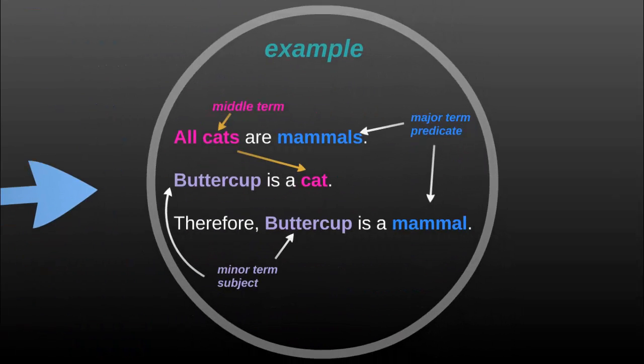So let's look at an example of a categorical syllogism. Here you can see that the middle term connects the two premises. The major term is the predicate of both the major premise and the conclusion, and the minor term is the subject of both the minor premise and the conclusion.